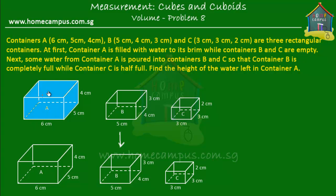Water from container A was poured into container B such that container B was filled to the top — container B is completely full. Now what about the water level in container C? Container C is half full, which means that if the height of container C is 2 cm, then water was filled until halfway, which means until 1 cm.